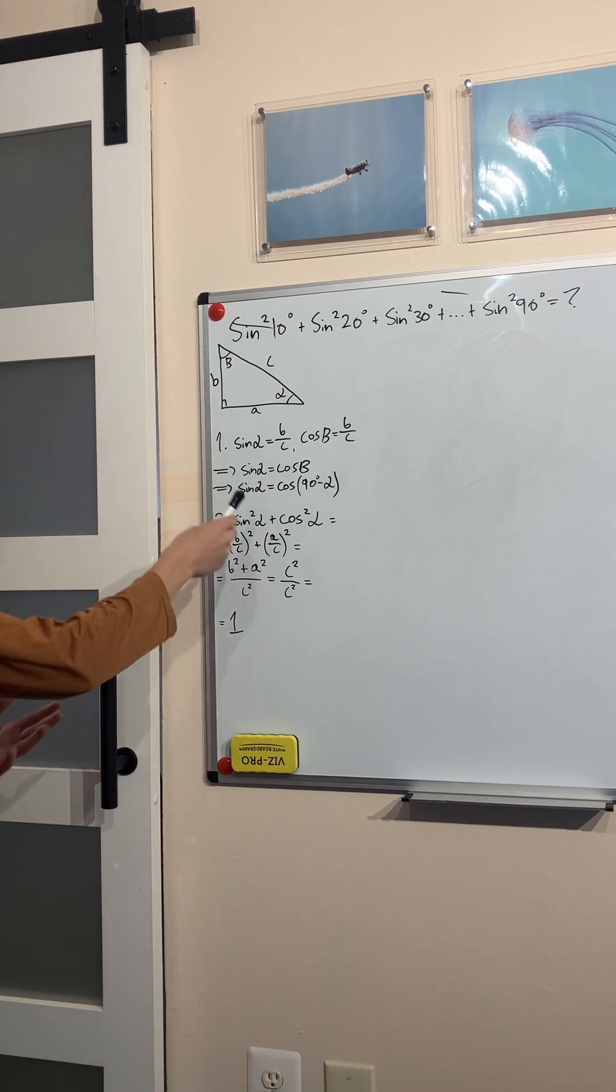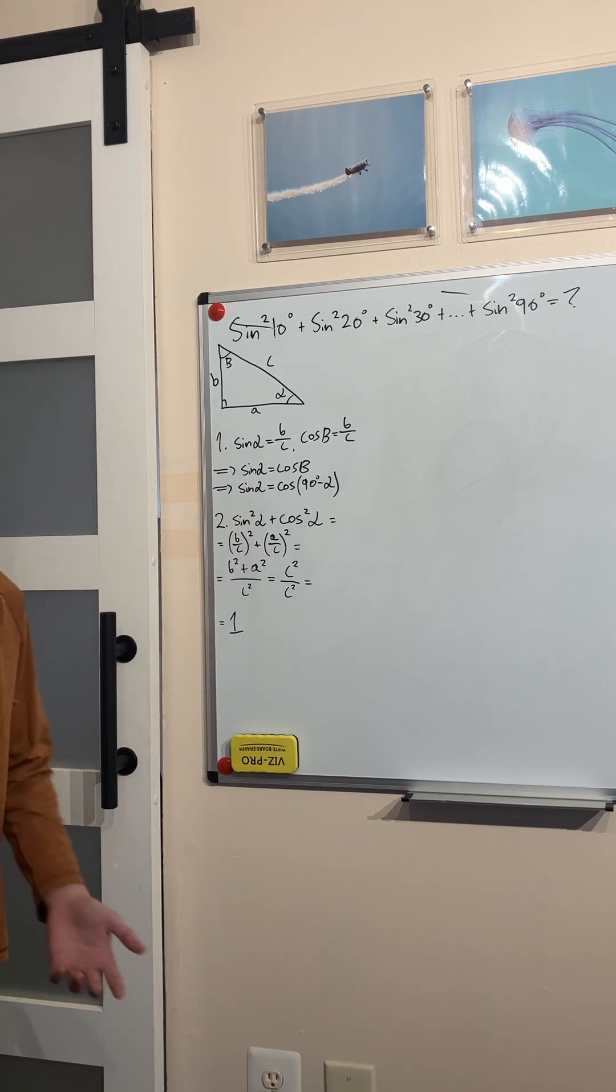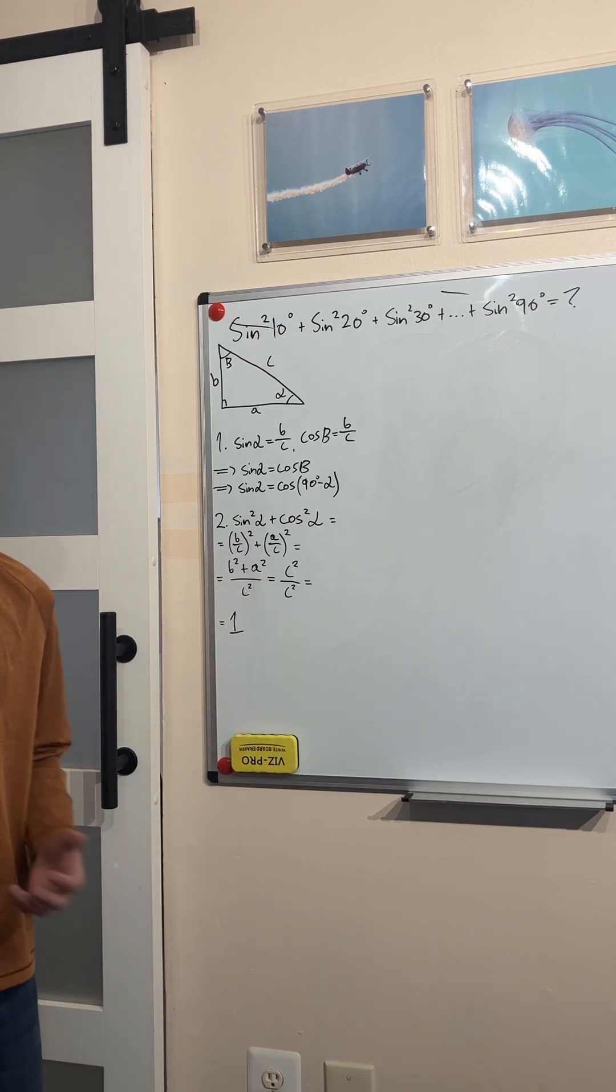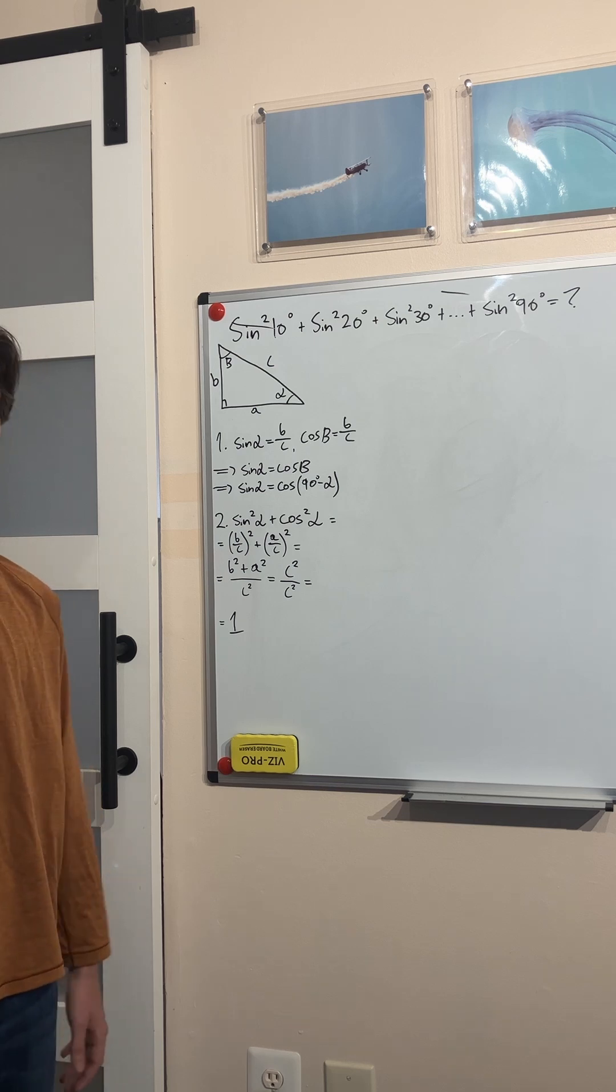But remember this is a right triangle. b squared plus a squared is equal to c squared by the Pythagorean theorem. That means we get c squared over c squared which is one. The sine squared of any angle plus the cosine squared of that angle is equal to one.